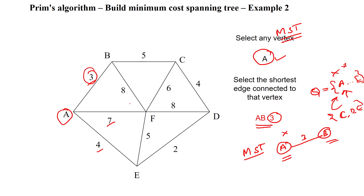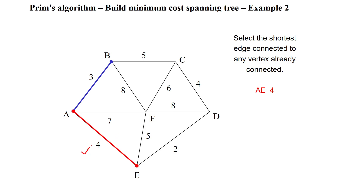From B, the minimum cost edge is evaluated. A has outgoing edges of cost 4 and 7; B has edges of cost 5 and 8. Among these, 4 is the minimum weight. So we select the edge between A and E. After selecting E, we remove E from the queue. The queue now contains only C, D, and F.